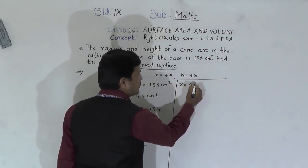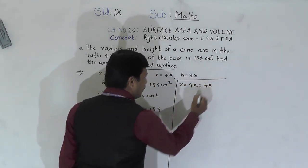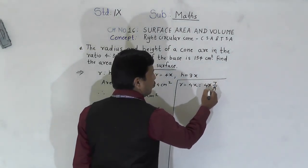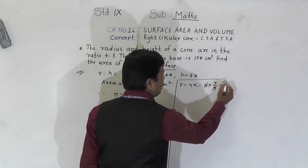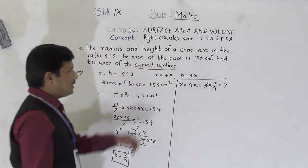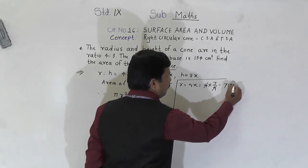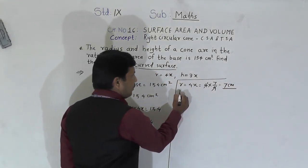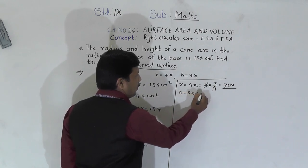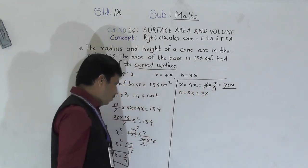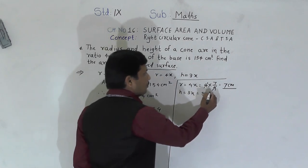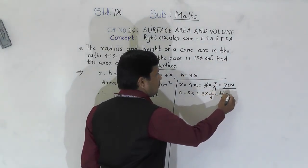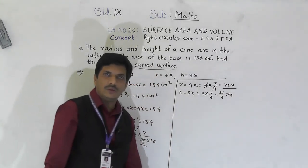Radius r = 4x = 4 × (7/4) = 7 cm. Height h = 3x = 3 × (7/4) = 21/4 cm. Now we have both radius and height.